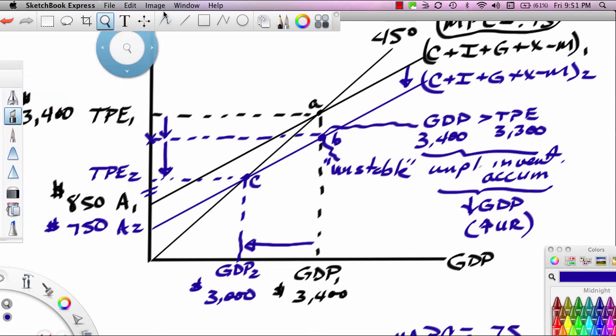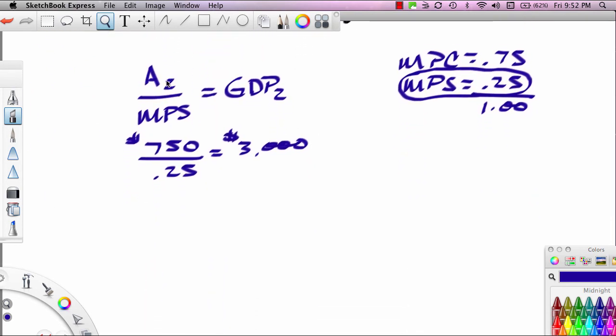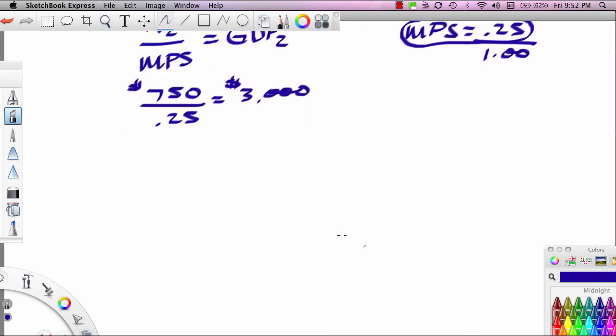Our new TPE level is 3,000. What ends up happening here: the drop initially is 100, but that causes GDP to drop by 400, which causes spending to drop another 300. How do you know it's another 300? Because we're moving from A to C ultimately. If you move down a 45 degree line, the distance on the x-axis, the GDP axis, has to equal the total distance of change on the y-axis, the TPE axis. So there was an initial drop in spending of 100. Let me write this out below so you can write this down.